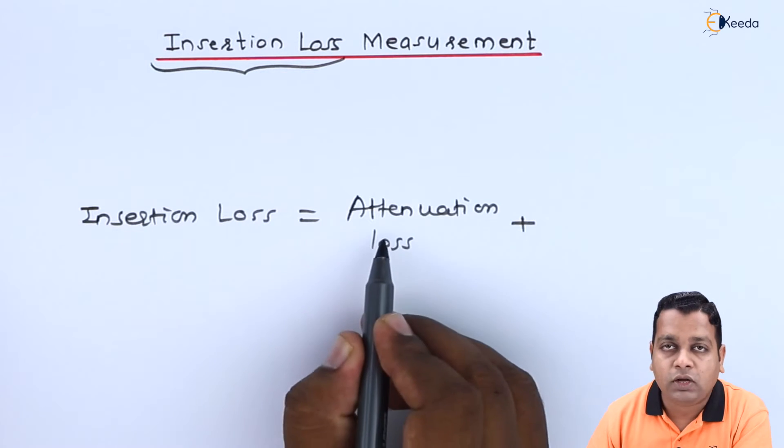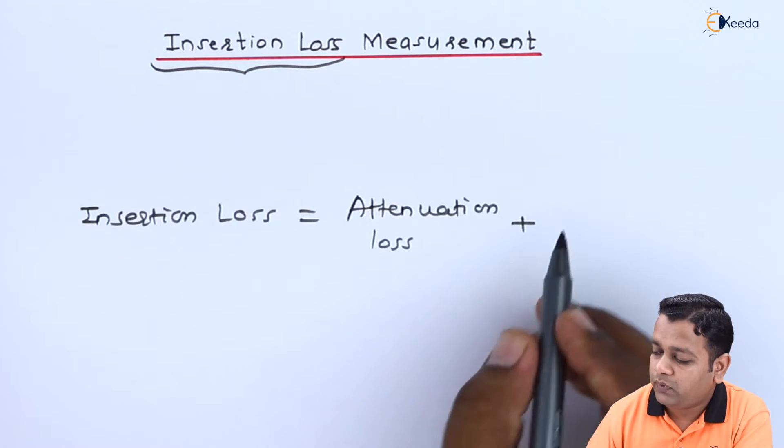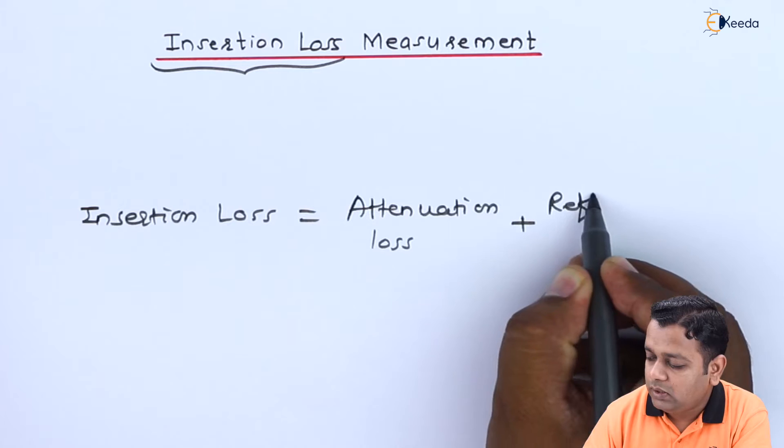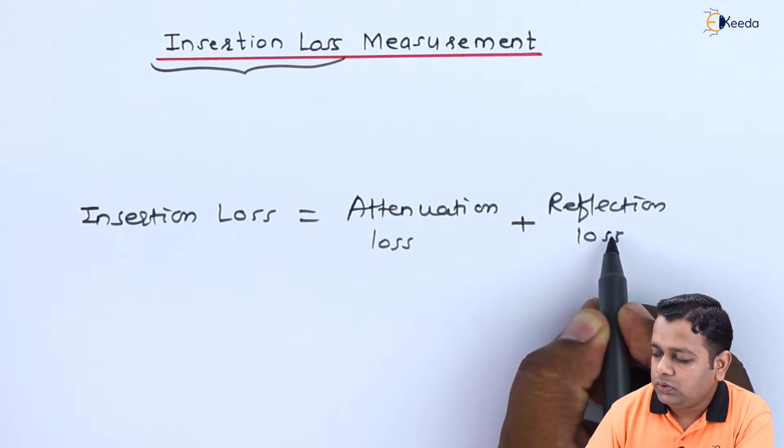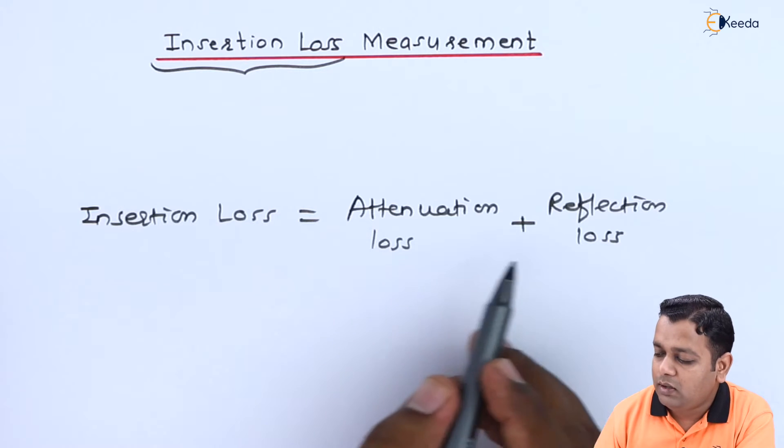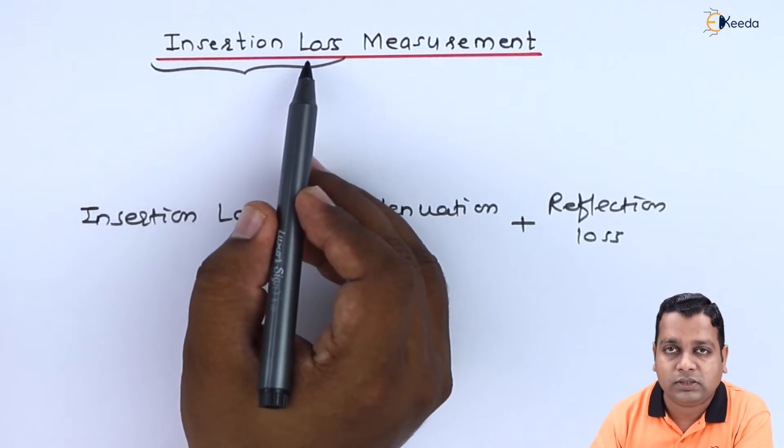When this attenuation loss is added to the loss because of reflection, the reflection loss and attenuation loss together are regarded as the insertion loss.